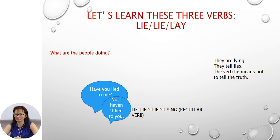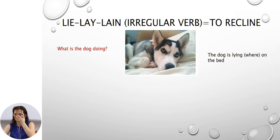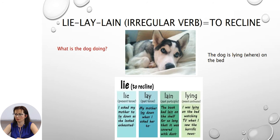Let's learn these three verbs: lie, lie, and lay. What are the people doing? They are lying — they tell lies. The verb 'lie' means not to tell the truth. It is a regular verb: lie, lied, lied, lying. The other verb 'lie' means to recline — it is an irregular verb: lie, lay, lain. For example: present — 'I asked my mother to lie down as she looked exhausted'; past — 'My mother lay down when I asked her to'; past participle — 'The book had lain on the shelf so long it was covered with dust'; present continuous — 'I was lying on the bed watching TV when I saw the horrific news.'